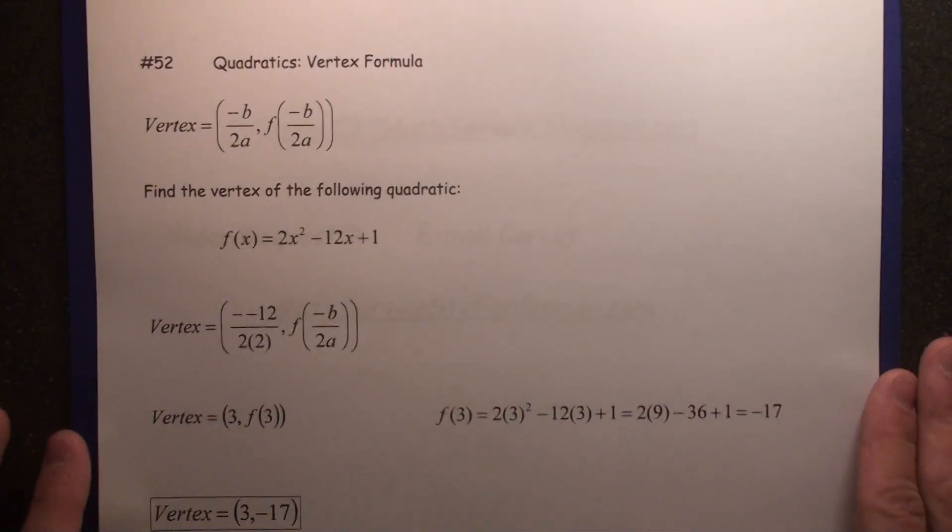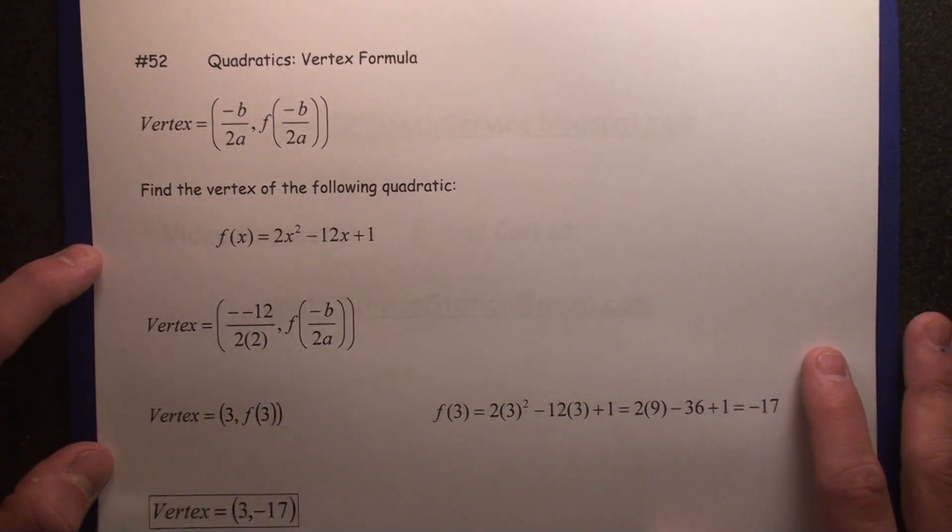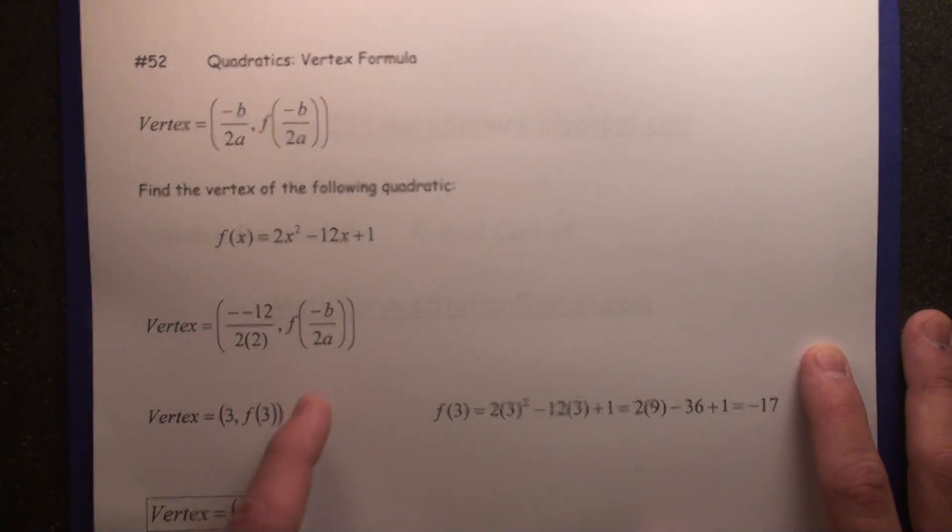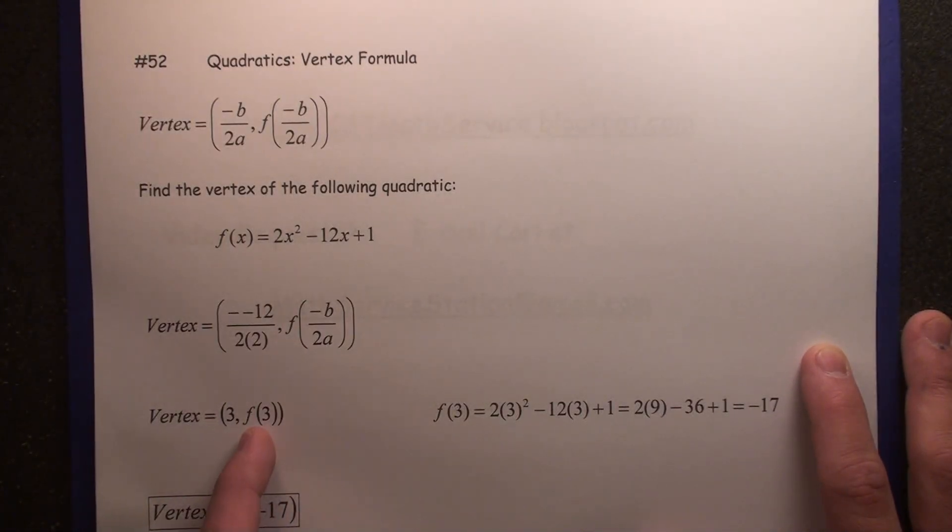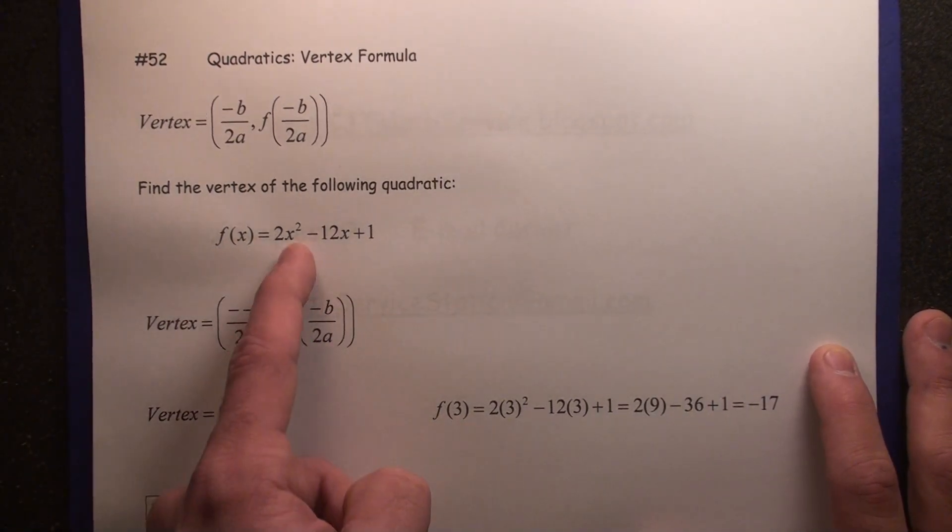This is an alternative to using the complete the square method. Now, we would then take that 3, plug it into the function, so we would find f of 3. We plug 3 in for x.